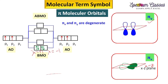For the π_y orbital, it is perpendicular to the xz plane. Now, assigning reflection symmetry: for the π_x orbital, above the plane we have the same type of lobe color and below the plane the same type as well — it is symmetric about the xz plane. But for the π_y orbital, it is negative upside and positive downside, so it is asymmetric about the xz plane. These two orbitals are degenerate.